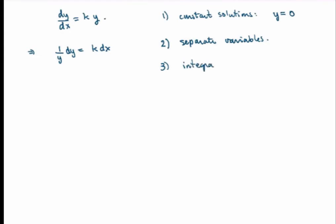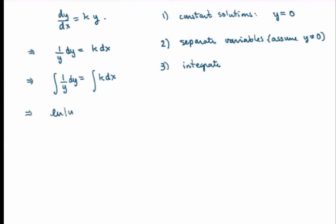The third step is to integrate. When we separated variables we assumed y is not equal to zero, which is why we treated the constant solution separately. Now we take the integral of both sides. This only makes sense because the equation is separated. Both sides are standard indefinite integrals. Integrating the left-hand side gives the log of the absolute value of y, and the right-hand side gives k times x plus a constant of integration we'll call d. Very importantly, don't forget the constant of integration — this is where the constant in the general solution of the differential equation comes from.